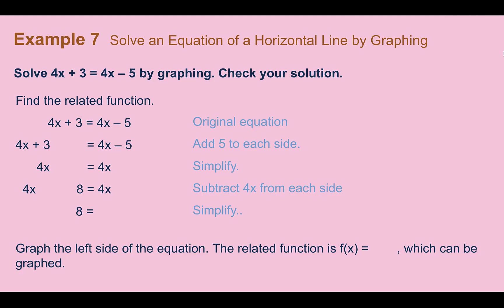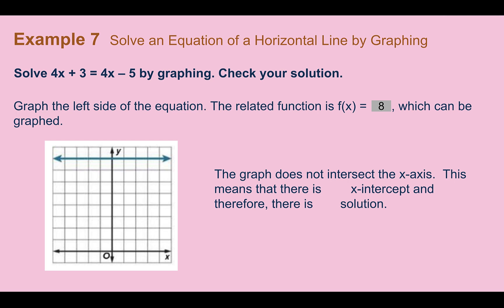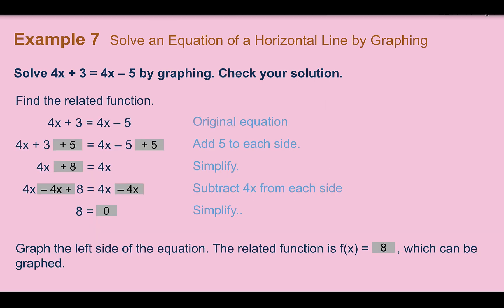Example 7: Solve an equation of a horizontal line by graphing. Solve 4x + 3 = 4x − 5. Adding 5 to both sides and subtracting 4x gives 8 = 0, so the related function is f(x) = 8. This graphs as a horizontal line 8 units up with no x-intercepts, meaning there is no solution. We could have known this immediately because the variable canceled out and we got a false statement.